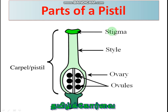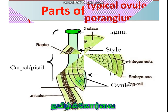Parts of a pistil: it consists of the stigma, which receives the pollen grains. The pollen grains germinate and form a pollen tube through the style, then it enters into the ovary, then into the ovule to deliver the male gamete so that the ovule can become the seed. So these are the ovules present inside the ovary.